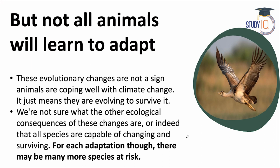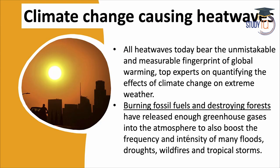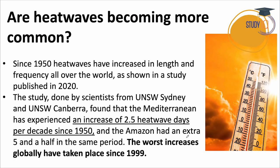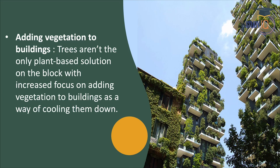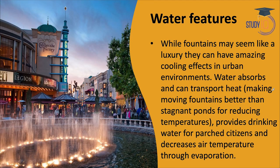Not all animals can adapt, which is why species are still at risk. Climate change drives heat waves — the underlying reasons include deforestation, forest fires, burning of fossil fuels, and greenhouse gas emissions leading to global warming. Heat wave length and frequency have been increasing since 1950. To reduce the negative impact of heat waves, we can plant more trees to lower temperatures, increase vegetation cover, and add water features like fountains.